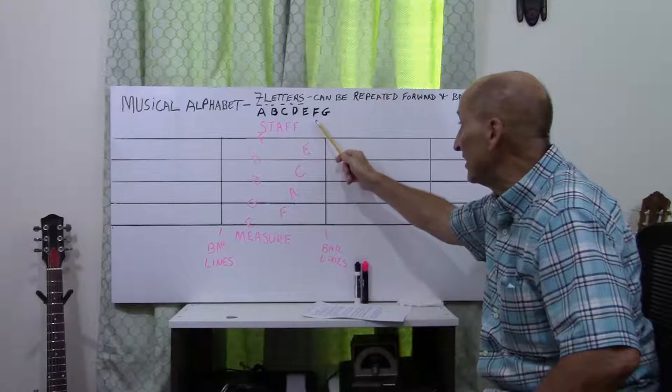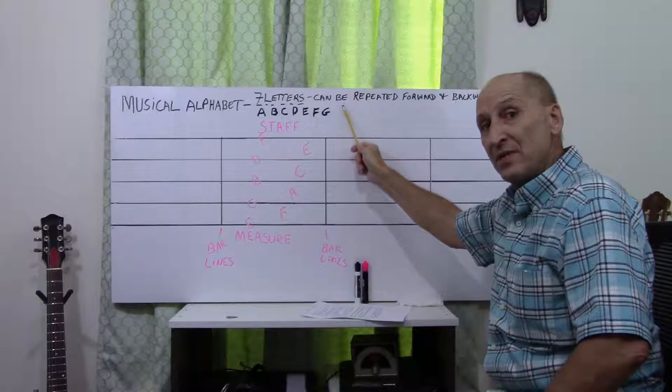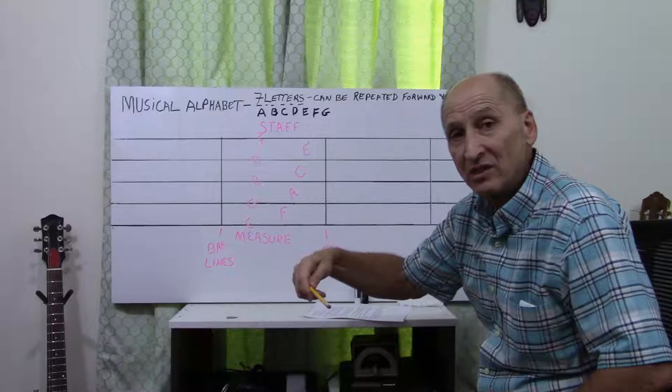A, B, C, D, E, F, G. After G, it goes back to A, B, C, D, E, F, G. It endlessly repeats.